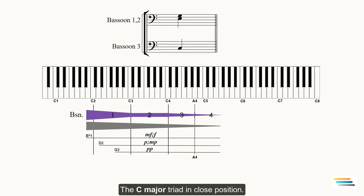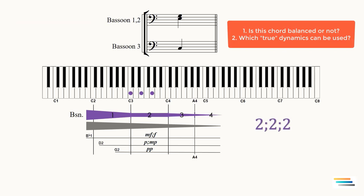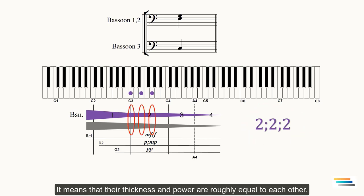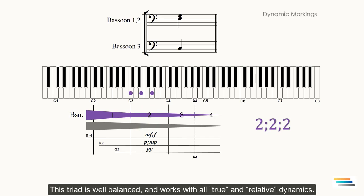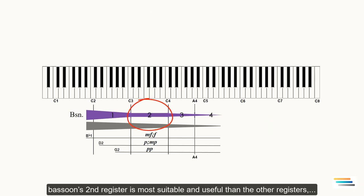Let's move to the next one. The C major triad in close position. The third bassoon plays the C. Second and first bassoon take E and G. All three instruments play in the same register. It means that their thickness and power are roughly equal to each other. This triad is well balanced and works with all true and relative dynamics.